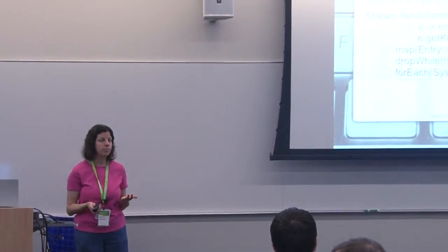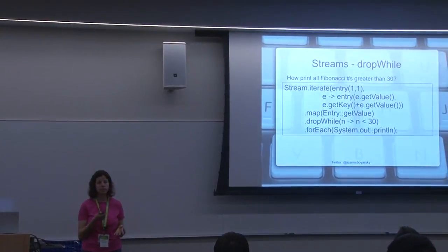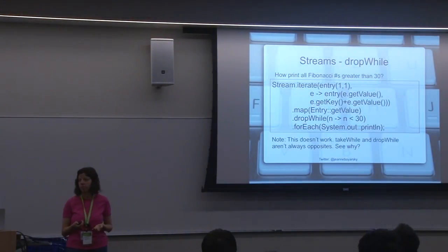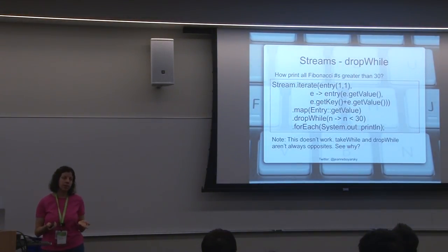Just like take while, we have a drop while. So we could use drop while to print all the Fibonacci numbers greater than 30. Any ideas why that won't work? Right. I don't want to list all the Fibonacci numbers greater than 30 for you because that would take the whole conference and beyond. So this does not work. Logically, it's good. It says I want the ones greater than 30, but we've got the infinite stream problem. If you were to add a limit to this, it would work.